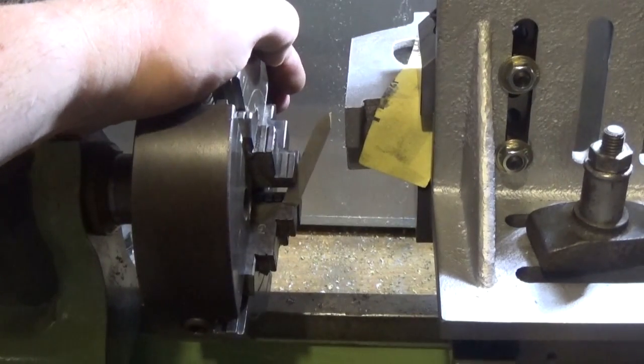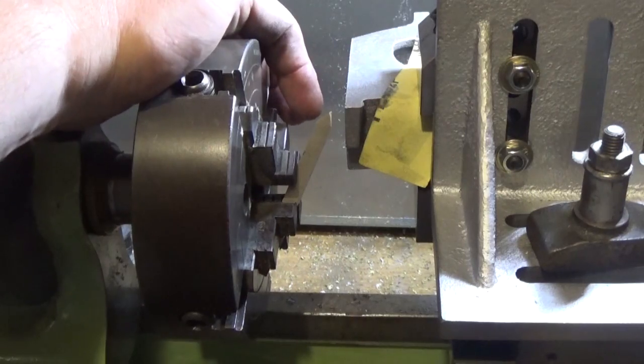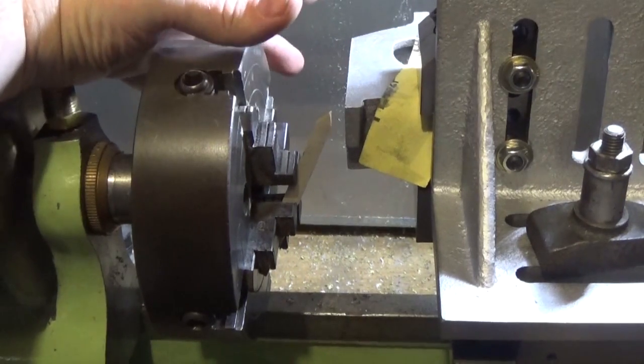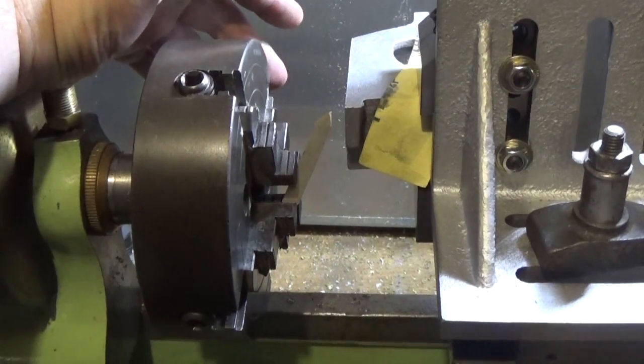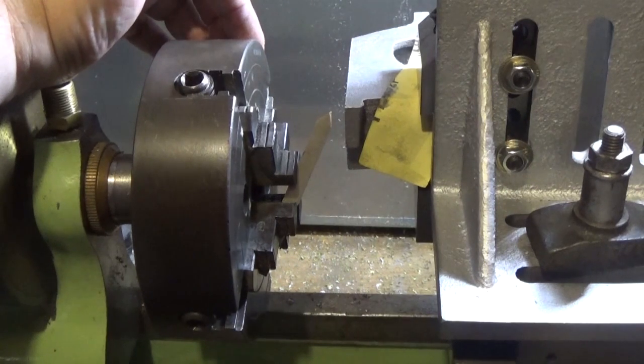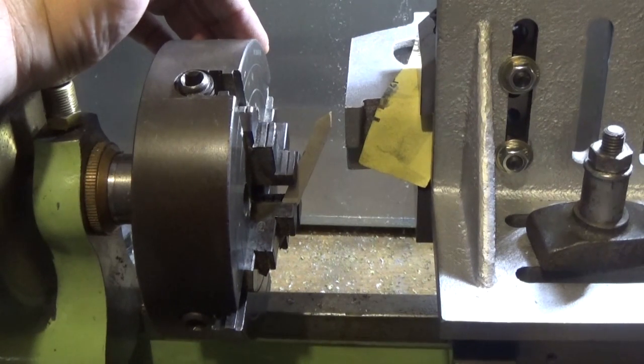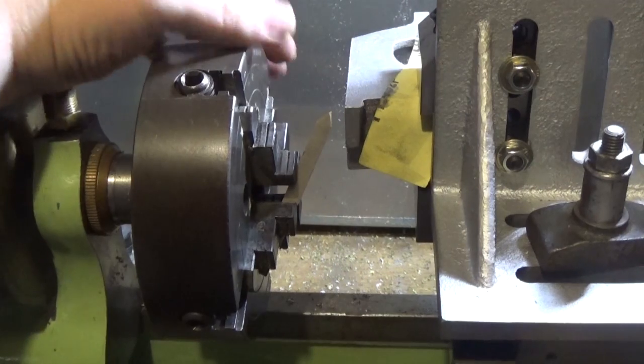Probably it'd be nice to make a decent fly cutter. Myford Boy made one out of a faceplate, which is quite a good looking thing. And I'd like to make one that just starts on the T-slot there with the bolt, bolts down and a tool in it, it'd be really nice.